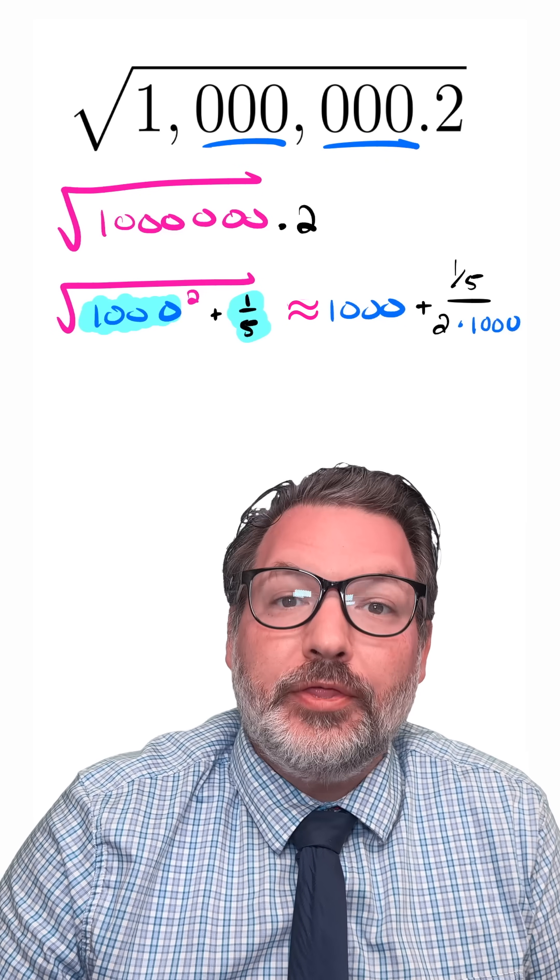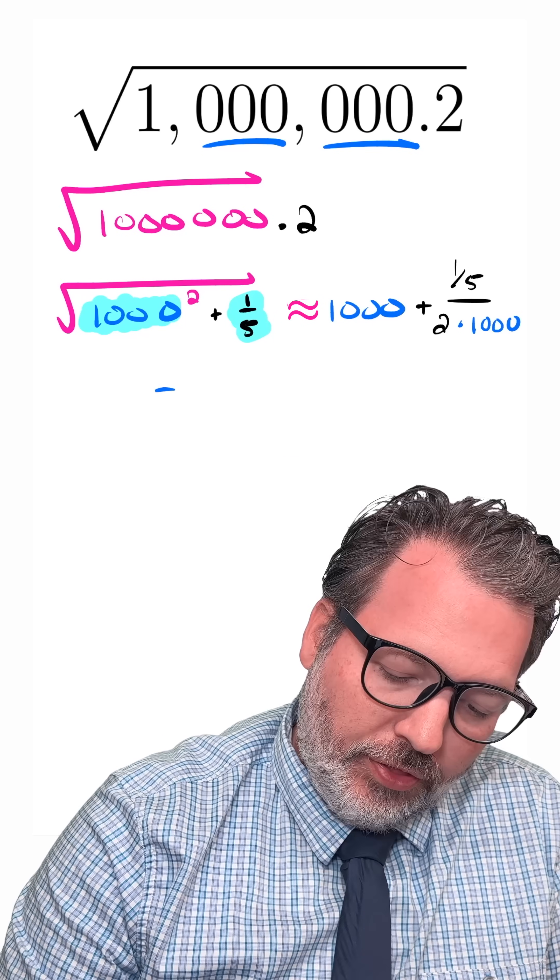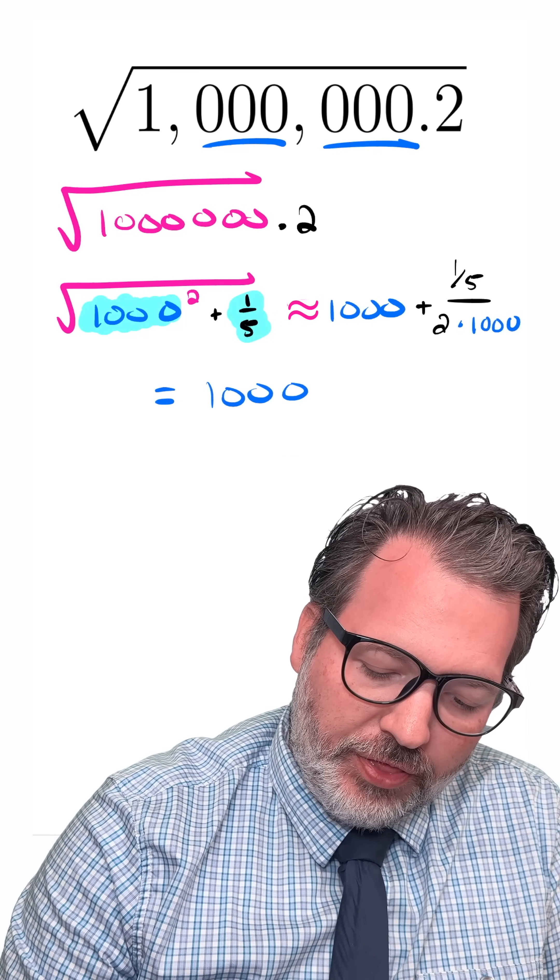So in this case, 2 times 1,000, which again is the square root of a million. The 1,000 we're just going to leave for a moment.